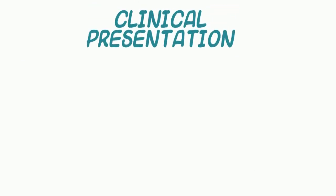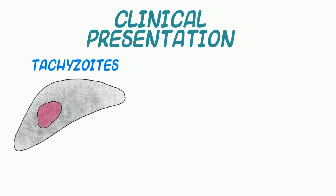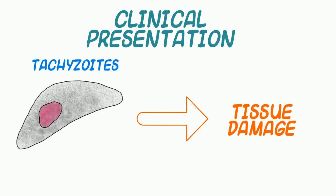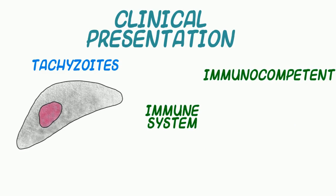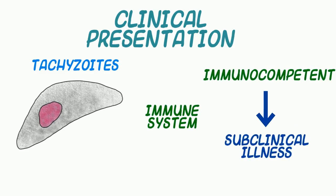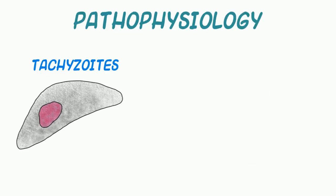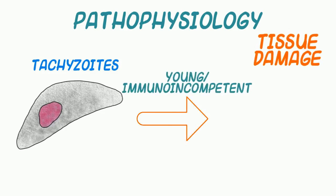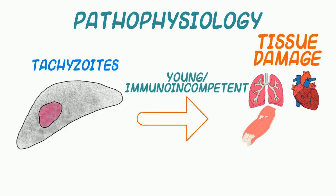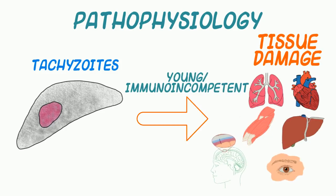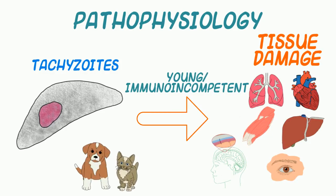But what clinical problems does toxoplasmosis cause? Tachyzoites lead to tissue damage, and the immune system plays an important role in limiting an infection. In adult immunocompetent animals, toxo is usually a subclinical illness. But the story can be quite different in the young, where systemically distributed tachyzoites can cause damage to the lungs, heart, skeletal muscle, liver, meninges, retina, and lymph nodes in young puppies, kittens, and piglets.